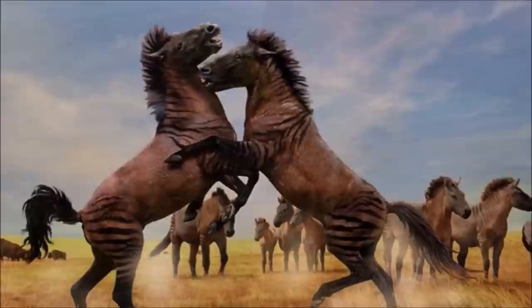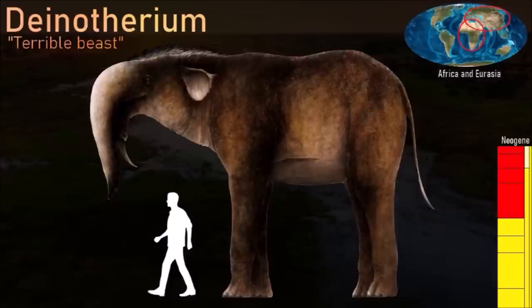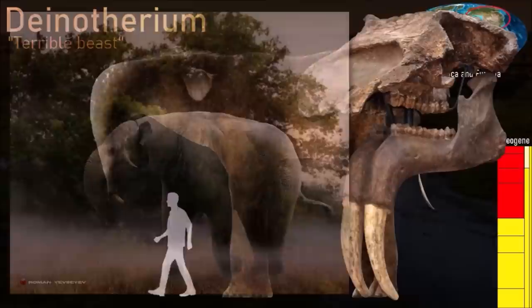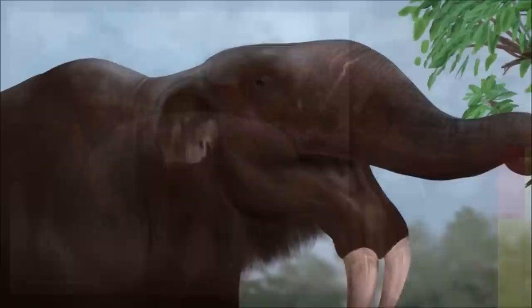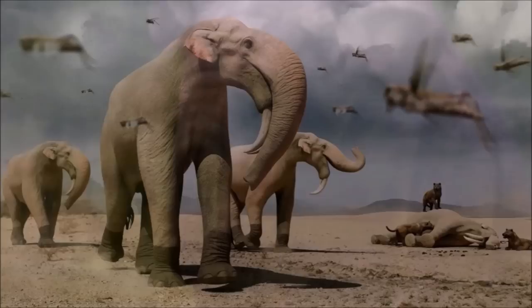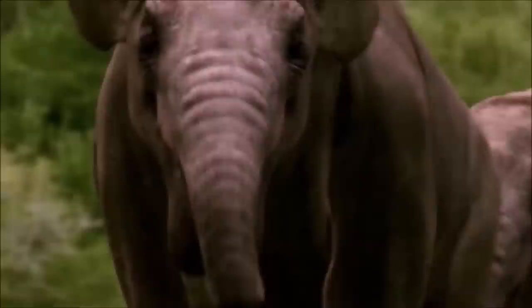Dinotherium was a relative of the mastodonts with tusks that curved down and back from the front of the lower jaw. The purpose of its tusks is still controversial, but it is likely they were used for hooking onto branches to drag them down and make it easier to reach the leaves. Dinotherium was slightly larger than today's African elephant, weighing about 14 tons, which makes it the third largest land mammal that ever lived. Its huge skull was almost 1 meter long; the nasal bones are very deep, suggesting that the trunk was wider and shorter than that of today's elephants.